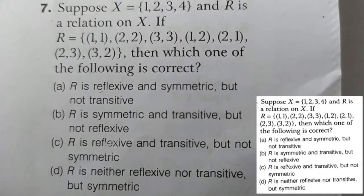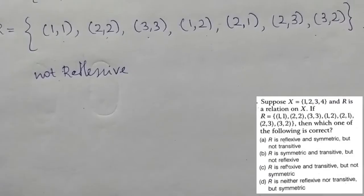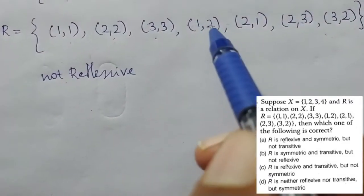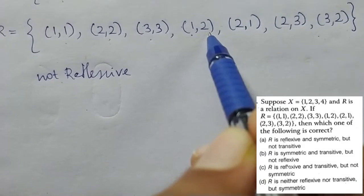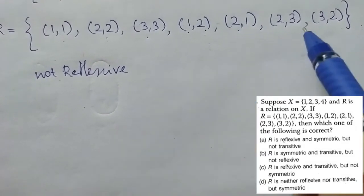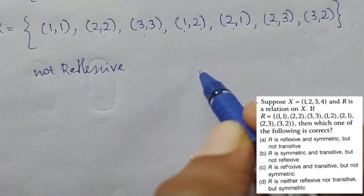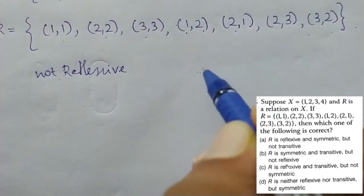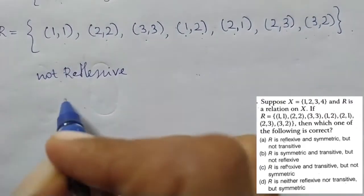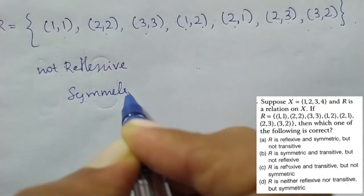Option A and C — avoid. I am symmetric. If we have symmetric, we have to check that element: (1,2). That means (2,1) exists. That is correct. That means (2,3) and (3,2). That means if A is related to B, B is also related to A. Then symmetric — but is it transitive?